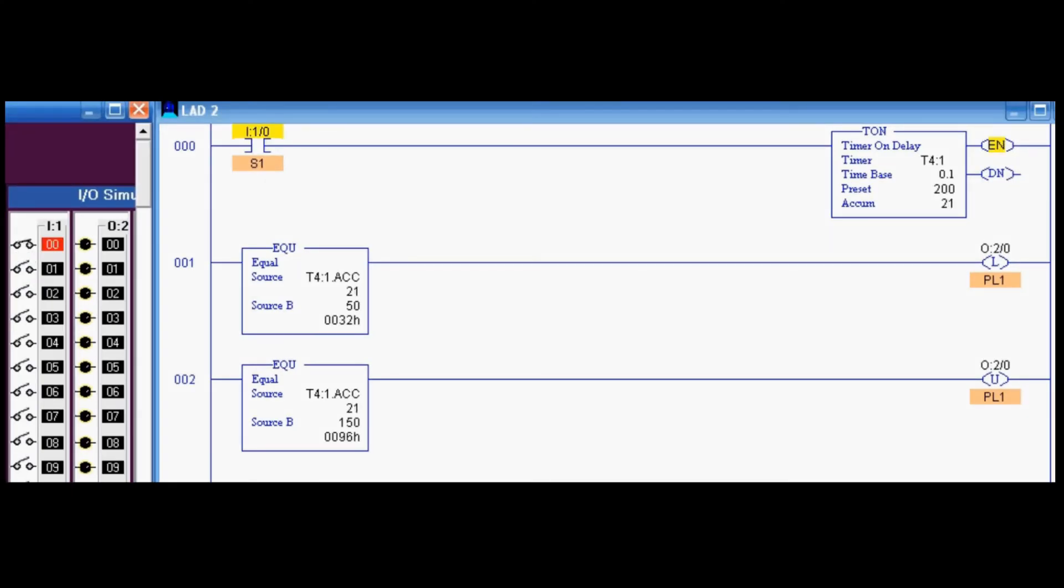Here is the simulation. The circuit is off for the first five seconds. After five seconds it becomes on, it will remain on until 15 seconds, and at 15 seconds it will become off. After that, it will remain off for five seconds.